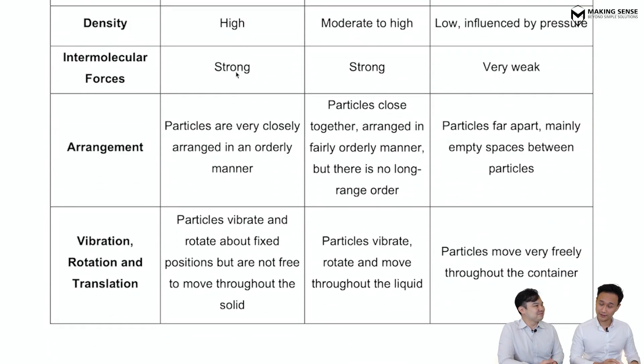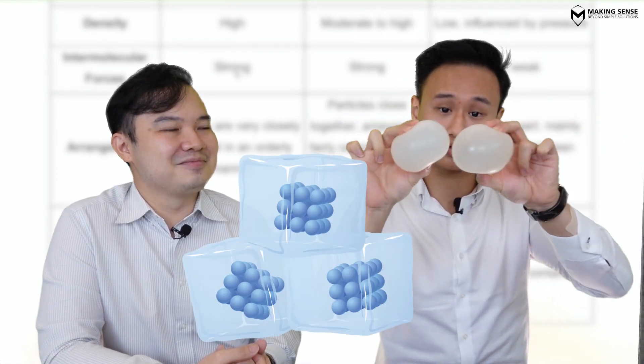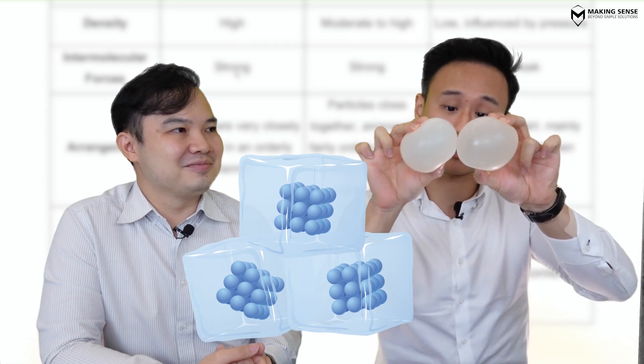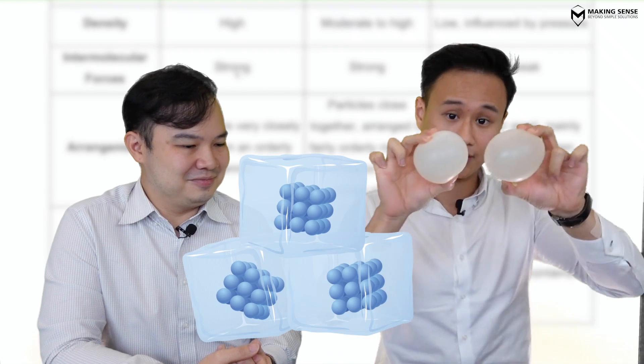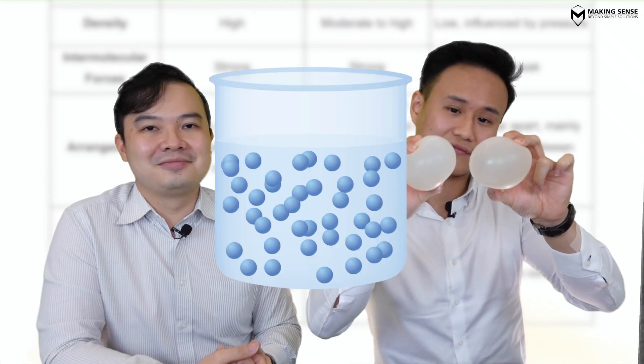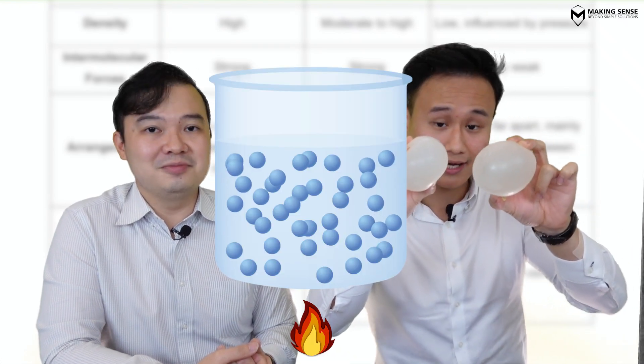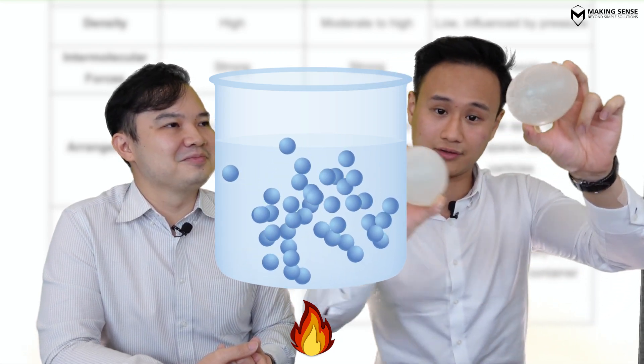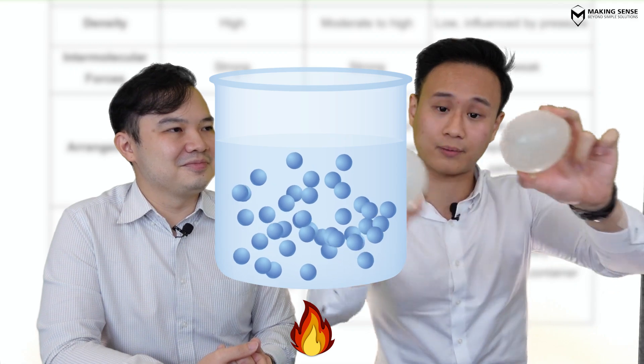Mr Tim, can you run us through that? Okay, so in a solid state, the particles are very very close to each other, they are fixed, they just vibrate in their fixed positions, and they're actually orderly arranged. In liquid state, if you heat it past its melting point, the arrangement becomes less orderly — a bit more messy. They slip and slide over one another, slightly further apart and in a slightly disorderly arrangement.